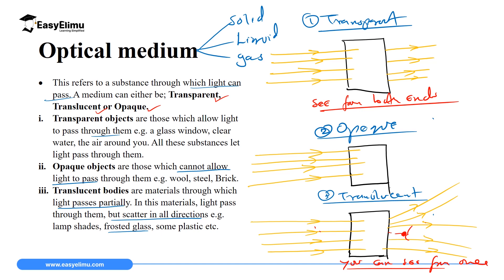Frosted glass is also applied on bank windows and bank doors. Other examples of translucent materials are lampshades — like the lamps we use at home — which spread or scatter light in different directions. Some plastics are also translucent.